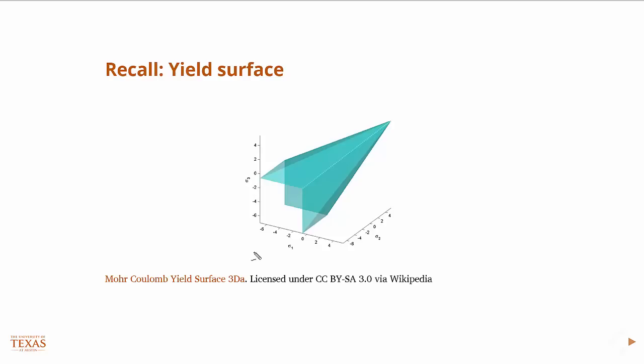You can always tell for a pressure-dependent yield surface which direction is positive, because the yield surface gets larger in the positive direction. In this case, it gets larger in the direction of increasing compressive hydrostatic stress.